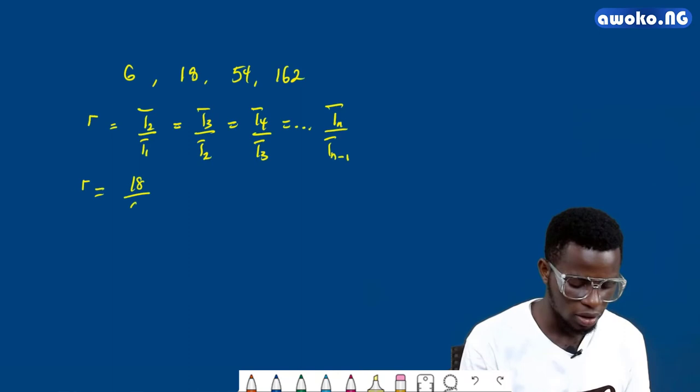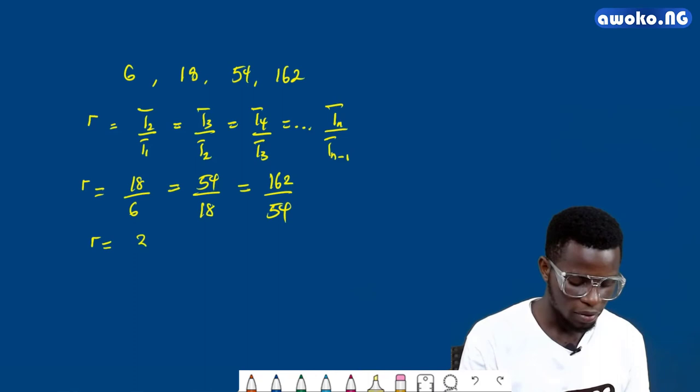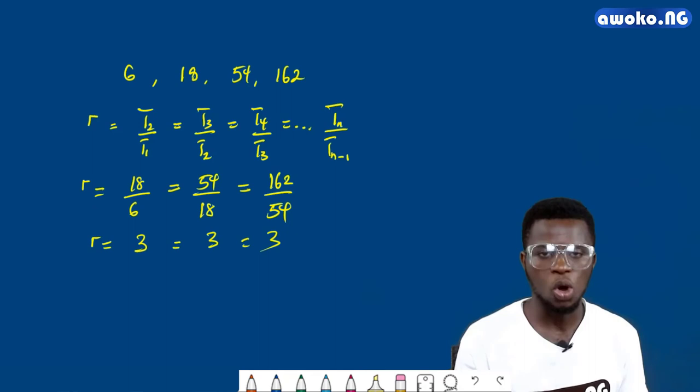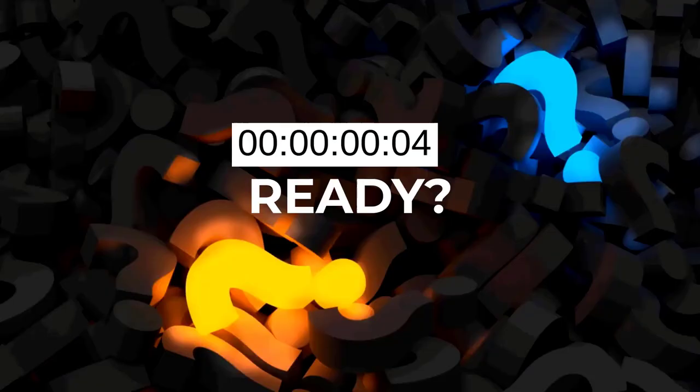For this sequence, the common ratio r is equal to 18 over 6, which equals 54 over 18, which equals 162 over 54. So r equals 3, which equals 3, which also equals 3. Therefore we can conclude that this sequence is a geometric progression. That is how to obtain the value for the common ratio.